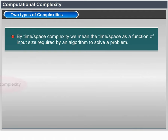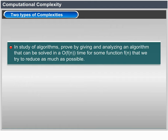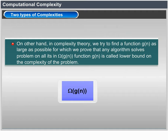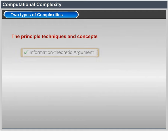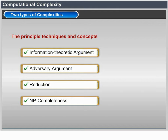By time or space complexity, we mean the time or space as a function of input size required by an algorithm to solve a problem. In the study of algorithms, we prove by giving and analyzing an algorithm that it can be solved in O(f(n)) time, trying to reduce f as much as possible. In complexity theory, we try to find a function g(n) as large as possible for which we prove that any algorithm solves the problem in Ω(g(n)). g(n) is called the lower bound of the complexity of the problem. The principal techniques and concepts include information theoretic arguments and information theoretic bounds.